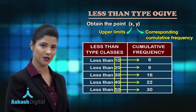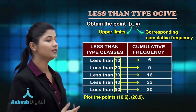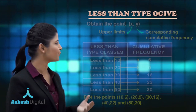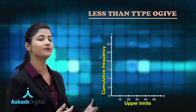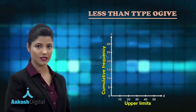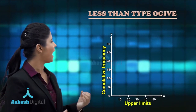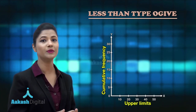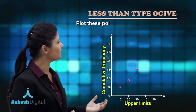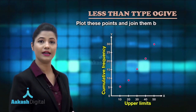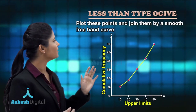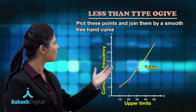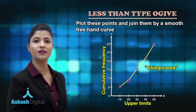After obtaining these points, they need to be plotted on the graph, where on the horizontal axis you mark the upper limits of the classes, and on the y-axis you mark their corresponding cumulative frequencies. You plot these points and then join them by a freehand curve. You will find that this is a rising curve — it is going upward. This is the less than type ogive.